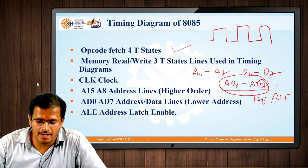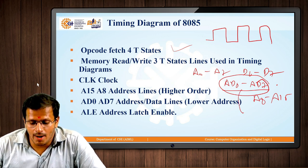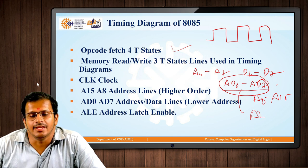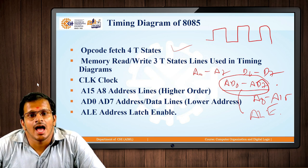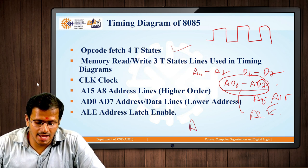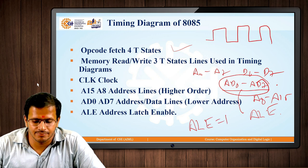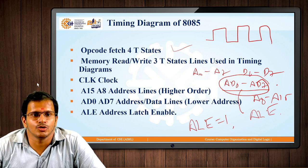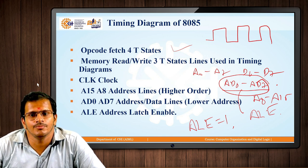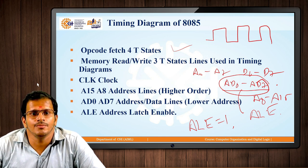That pin is called ALE — Address Latch Enable. When the value of ALE is 1, AD0 to AD7 will be working as A0 to A7. When the value of ALE is 0, then AD0 to AD7 will be working as D0 to D7.